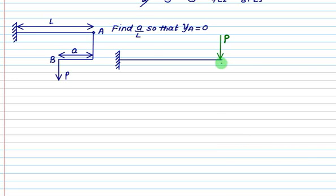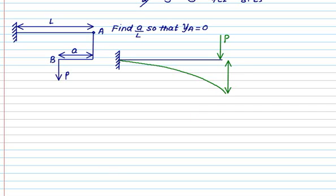If the magnitude of forces remains the same and this distance is L, the deformation curve will be downward. The deformation here will be for the lower point, and this deformation is Y1 equal to PL cubed divided by 3 times EI.